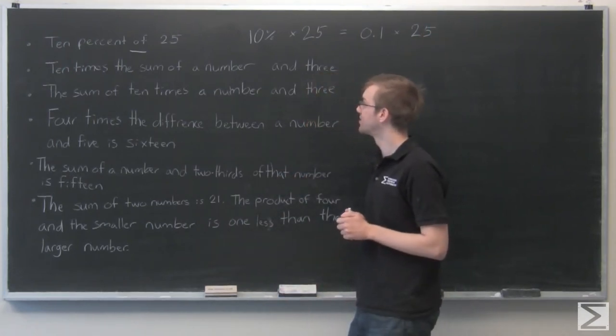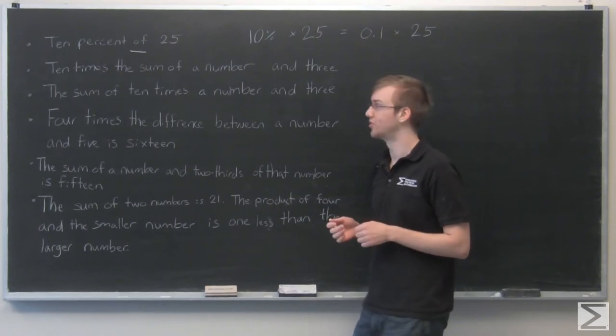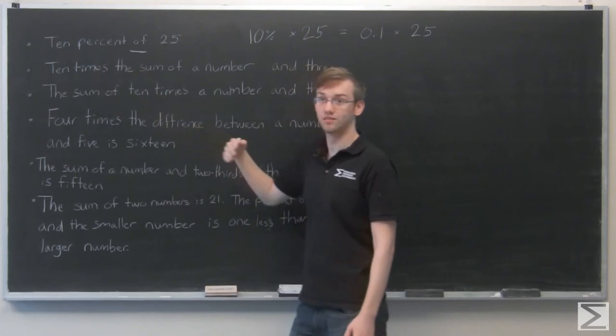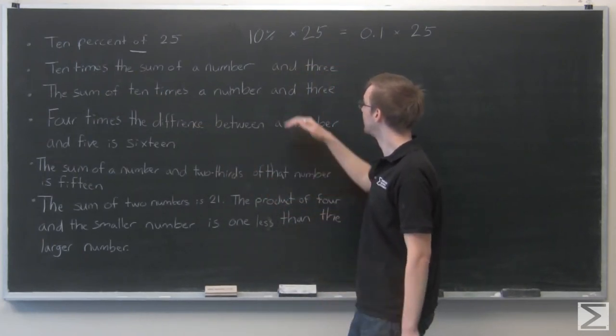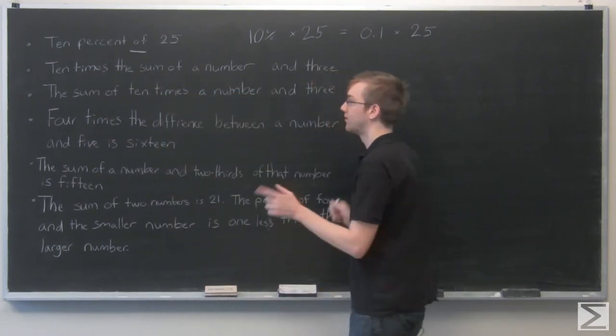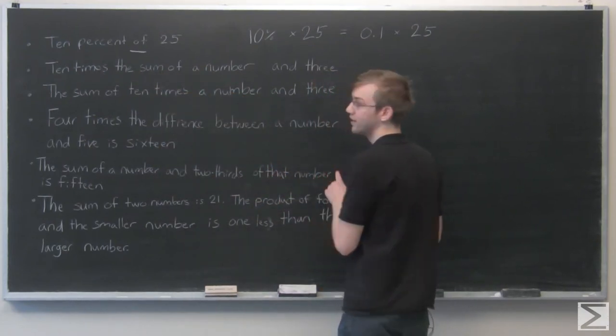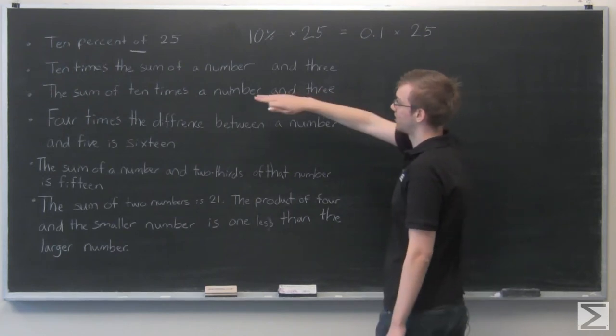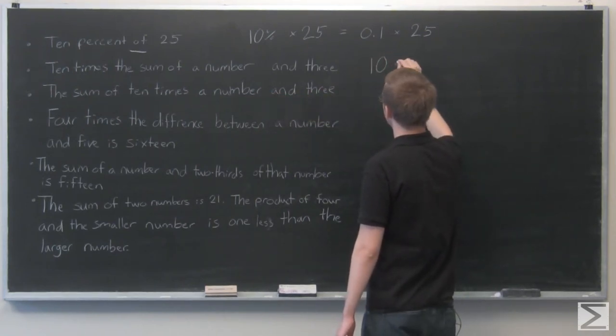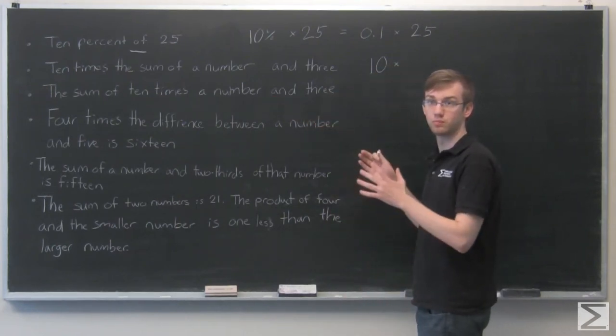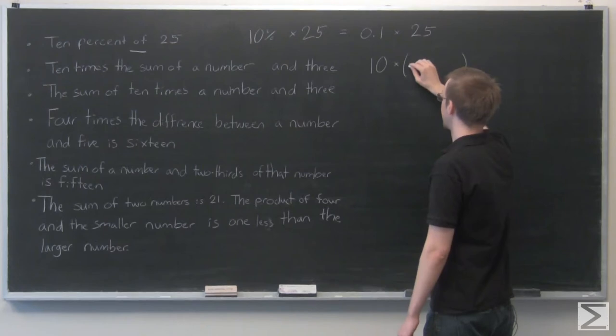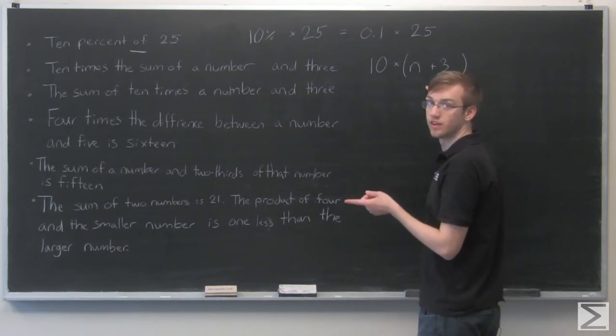The second one: 10 times the sum of a number and three. I see a bunch of different operations in this one. I see 'the sum of,' so it's an addition. I see 'times,' so multiplication. And 'and' goes with the sum of. Let's read it left to right: 10 times the sum of a number and three. In sentences, order is always very important. So we'll start at the left end and say 10 times the sum of. It sounds like 10 is being multiplied by a sum, so we're going to have to insert parentheses here. A number and three—let's say n and three. That's the sum of a number and three, and it's 10 times that sum.